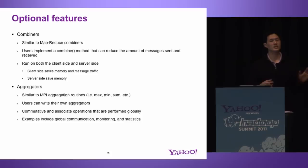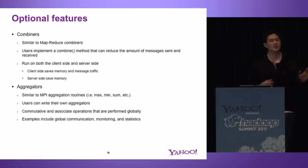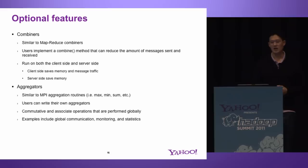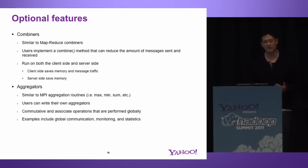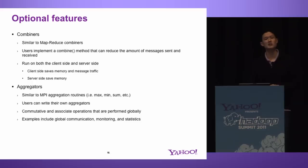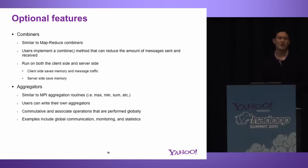We have a couple of optional features. One is the combiner. Combiners are very similar to MapReduce combiners — a way to reduce the amount of messaging sent across the wire and save memory. This is done on an application-specific basis; you write something that takes a message list and shrinks it down to a single message using whatever aggregation technique you like. We run this both on the client side before messages are sent, and also on the server side to save memory.